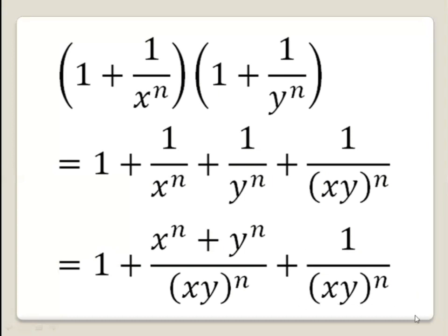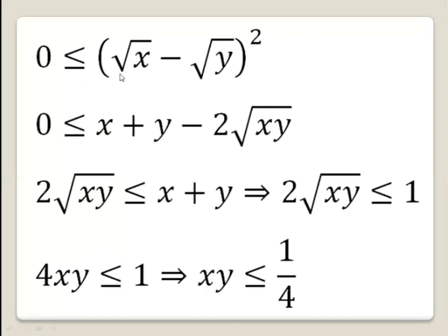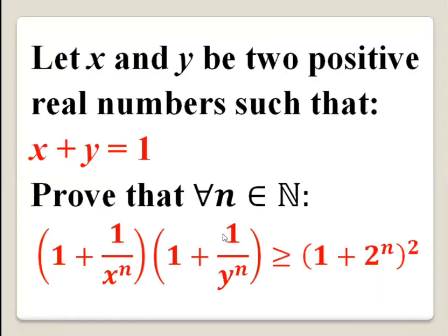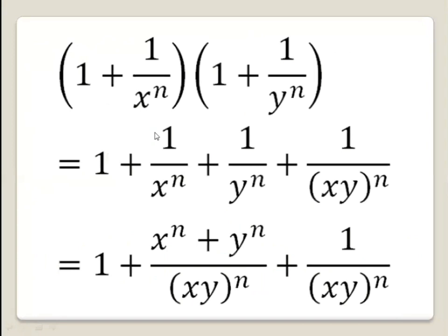We begin with the fact that (√x − √y)² ≥ 0. By the remarkable identity, this gives x + y − 2√(xy) ≥ 0, so 2√(xy) ≤ x + y. From the given condition, x + y = 1, so 2√(xy) ≤ 1.